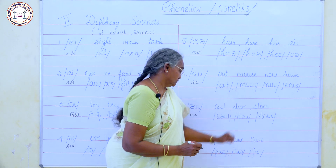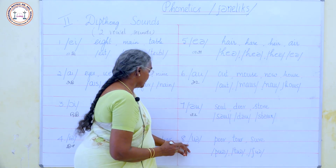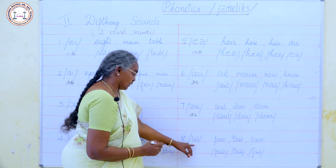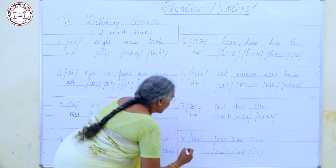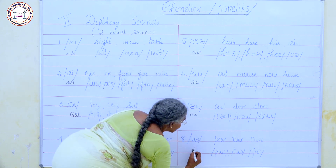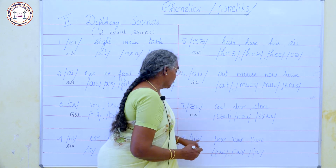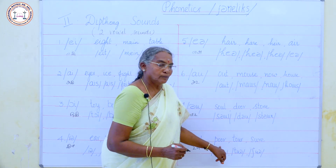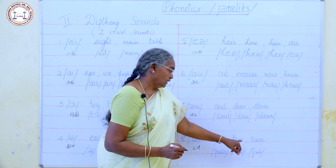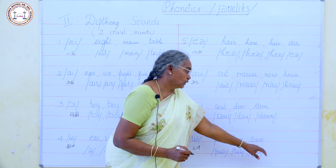The seventh diphthong sound is 'əʊ' — A plus U combined. Examples: soul, dome, stone. The eighth and last diphthong sound is 'ʊə' — U plus A combined. Examples: poor, tutor, and sure.